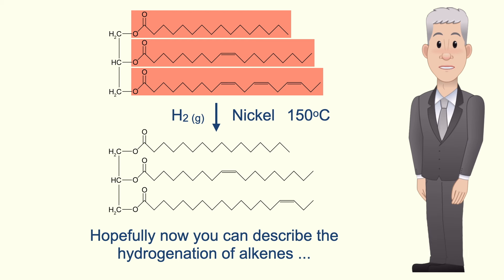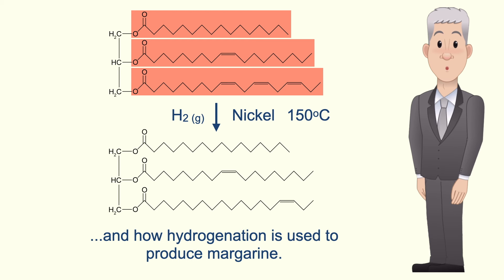Okay, so hopefully now you can describe the hydrogenation of alkenes and how hydrogenation is used to produce margarine.